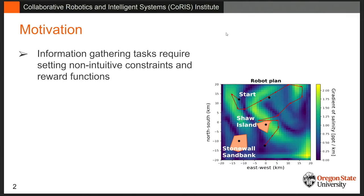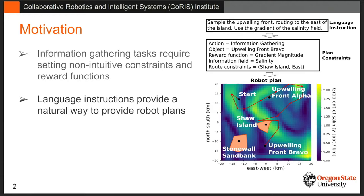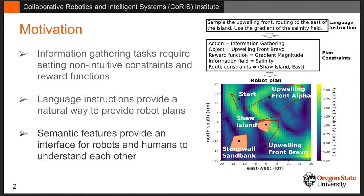The problem is that setting these constraints is very hard — it requires domain knowledge from both the robotics side and the scientist side. What we're proposing is using language instructions as the way to provide these constraints between the two. The key insight is that semantic features can be used as the interface between the human and the robot to communicate.